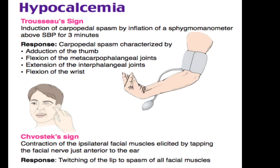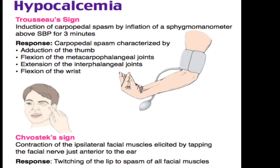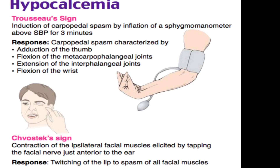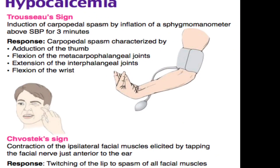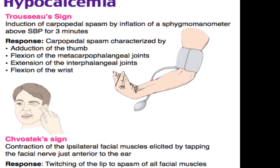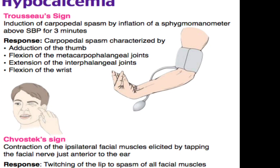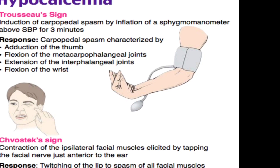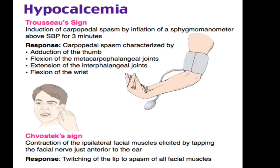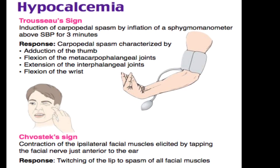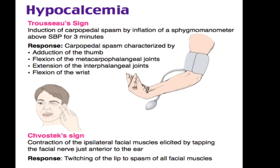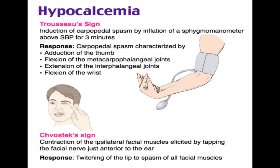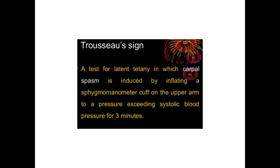Trousseau's sign is induction of carpopedal spasm by inflating the sphygmomanometer above systolic blood pressure for three minutes. The carpopedal spasm is characterized by adduction of the thumb, flexion at the metacarpophalangeal joint, extension of the interphalangeal joint, and flexion of the wrist. This slide is just for your information and not required to be copied down.